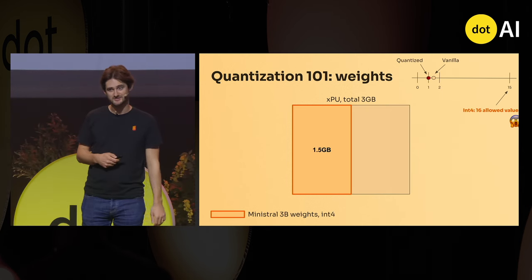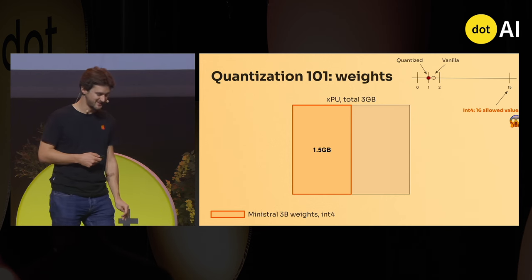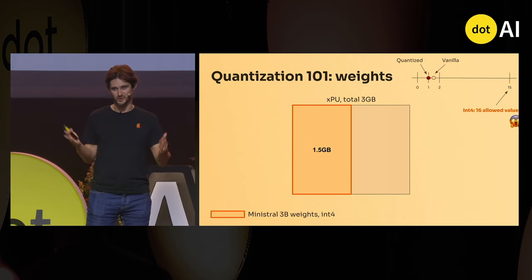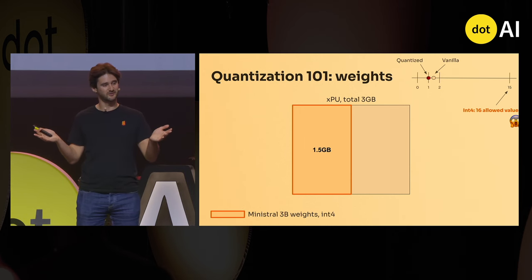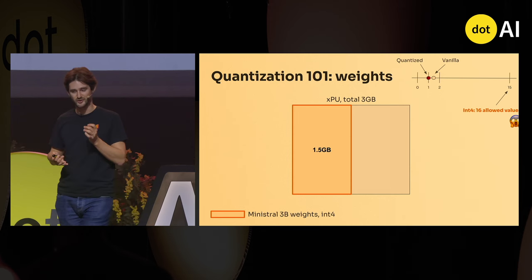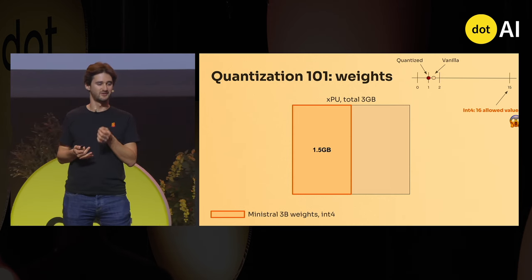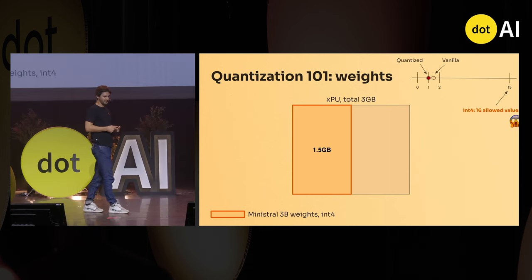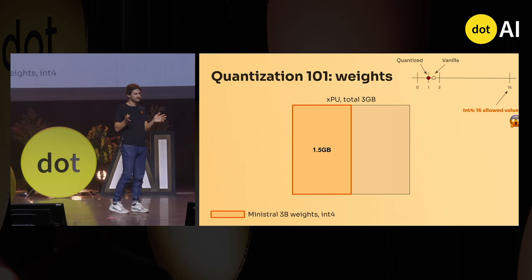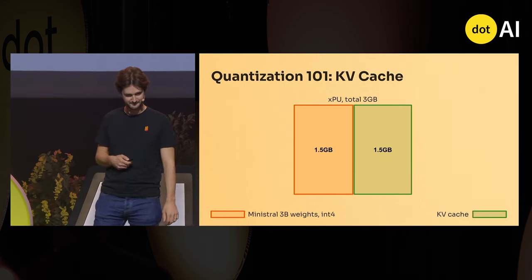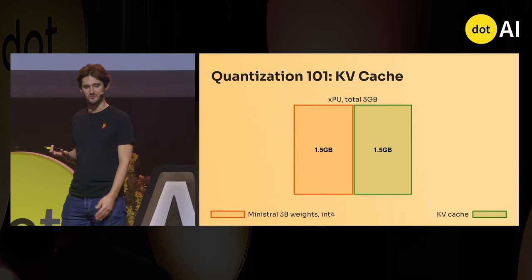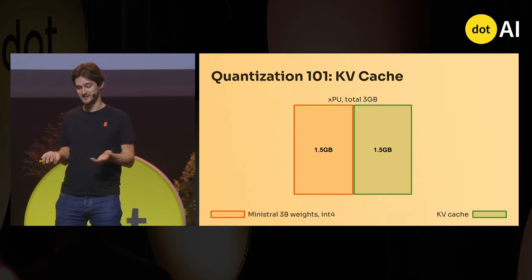We can go to INT4, and INT4 begins to be quite a beast because it allows only 16 values per weight. Imagine your transformer — a lot of floating-point numbers — now the weights only have 16 allowed values, modulo the scale that can change for blocks of weights. If you do that, you can fit in memory: 1.5 gigabytes — half a byte per weight — and the other 1.5 gigs is for the KV cache.